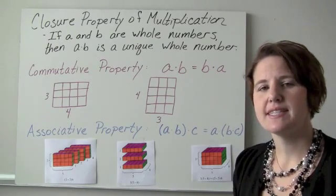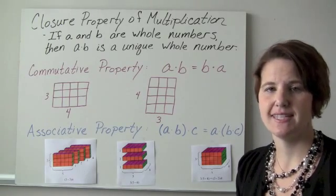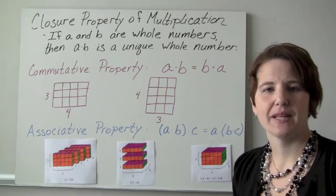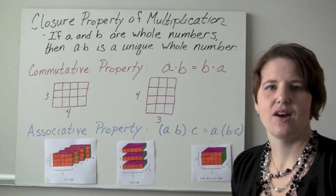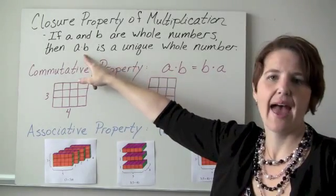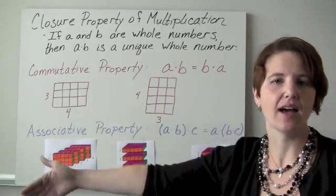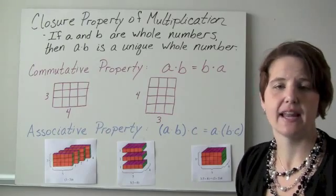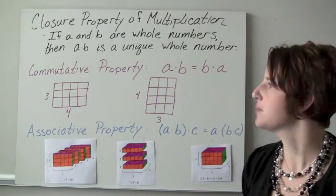This really stems from the fact that the whole numbers are closed under addition. When you think about multiplication as repeated addition, all we're doing when we look at A times B is adding up the number B, A times. When I add two whole numbers I get another whole number, so we also have the closure property for multiplication.